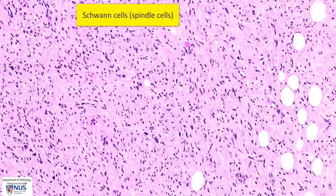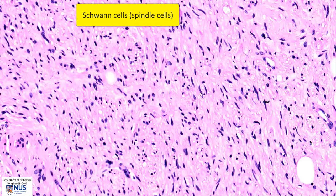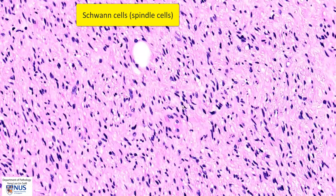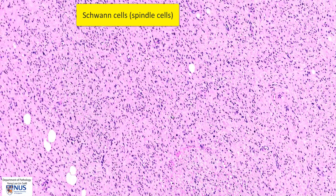The tumor is composed of spindle cells with very slender, elongated nuclei. Some of these nuclei are a little bit wavy as well. These are Schwann cells, and they are arranged in parallel bundles or fascicles. This is one of the components of ganglioneuroma — the neuroma component.